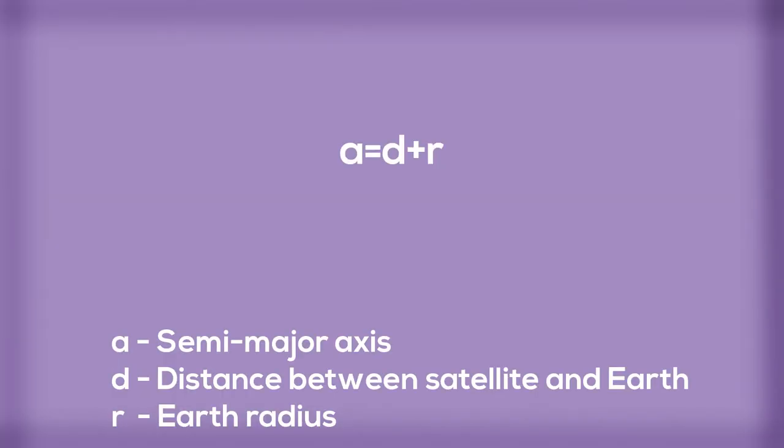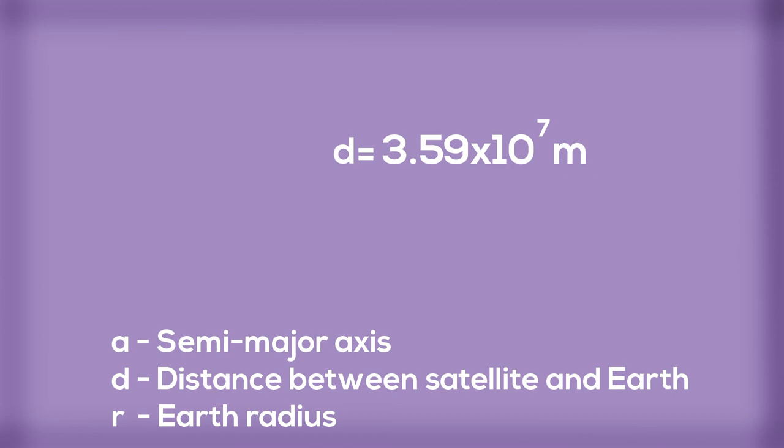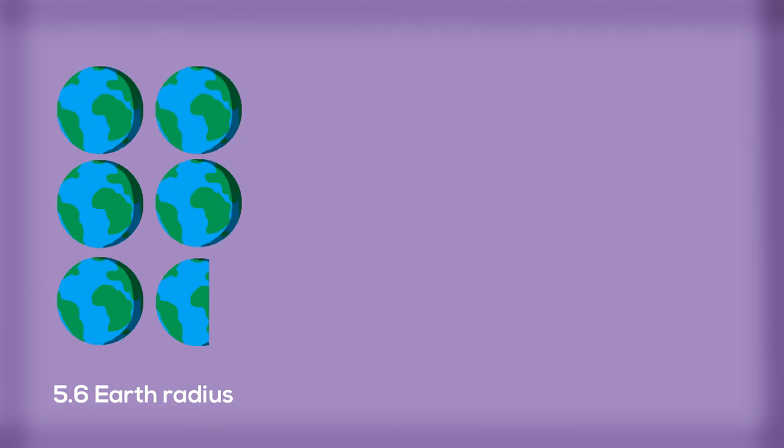Since the orbit of a geostationary satellite is a circle, the semi-major axis is simply the distance between the satellite and the surface of the Earth plus Earth's radius. So we minus Earth's radius from the result and we'll get our answer. It's 3.59 times 10 to the power of 7 meters or 35,900 kilometers. And that's about 5.6 times larger than the Earth's radius or 40,000 Burj Khalifas.